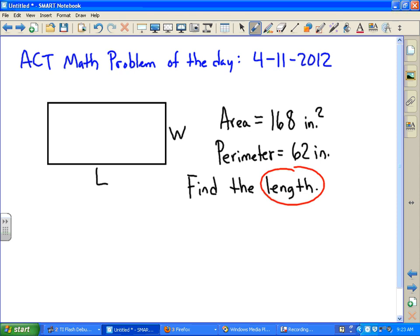Now, we know that the area is length times width, and that is 168. So the product of those two is 168. And we know that the perimeter is 2 times the length plus the width, and that is 62.